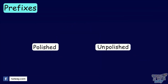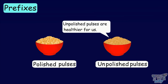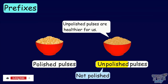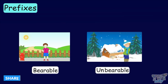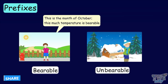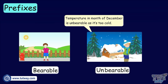Polished, unpolished. Polished pulses seem attractive, but unpolished pulses are healthier for us. Unpolished means not polished. Bearable, unbearable. This is the month of October — this much temperature is bearable. But temperature in the month of December is unbearable as it's too cold.